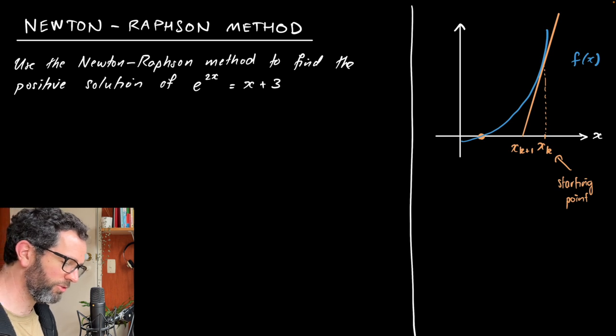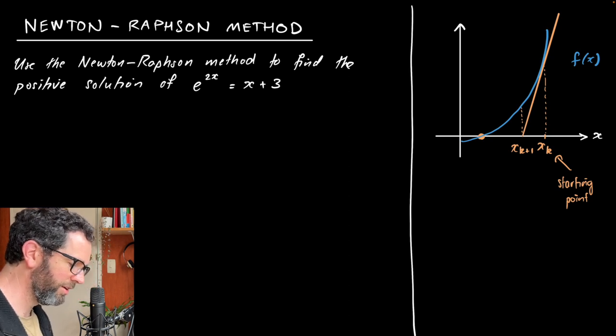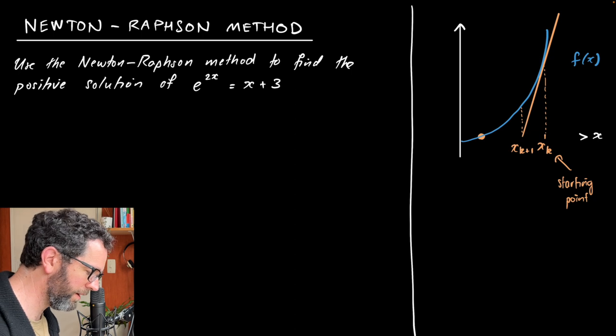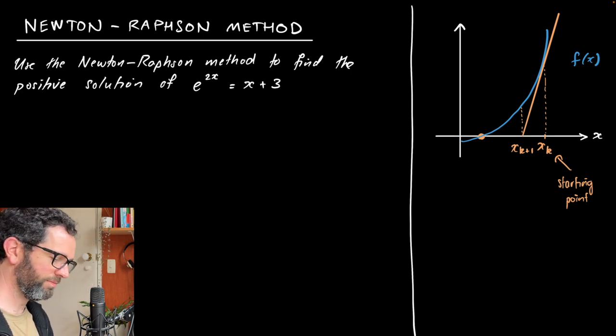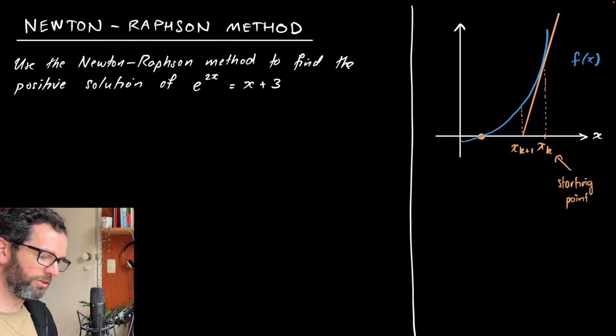And so what happens is we just do this over and over again. So we'd start at xk plus one, do the same thing, go up to the curve, draw a tangent line, and then find the new intersection, which might be around about there. And eventually that's going to converge onto the point that we're after. That's pretty much all there is to it.